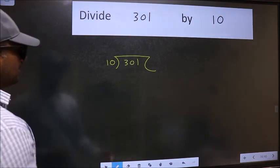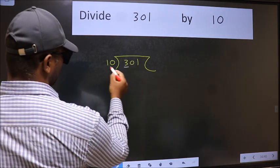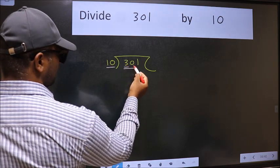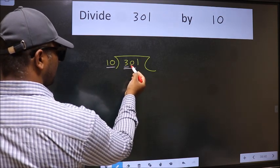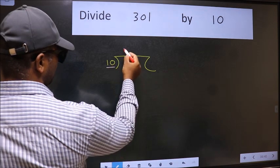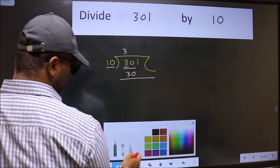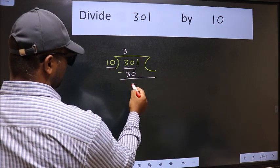Next, here we have 3 and here 10. 3 is smaller than 10, so we should take two numbers: 30. When do we get 30 in the 10 table? 10 times 3 is 30. Now we should subtract. We get 0.